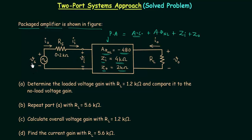VS is the source voltage, VO is the output voltage, RS is equal to 0.2kΩ and is the source resistance, and RL is the load resistance. This is the general case in which we have both source resistance and load resistance. From the last presentation we analyzed this particular case, so we will use the obtained results directly.